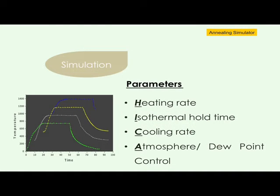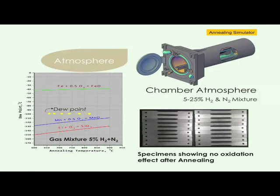Apart from simulating high heating and cooling rates, the most important feature of this simulator is dew point control of the annealing atmosphere to prevent loss of alloying elements due to oxidation at high temperatures. This can be easily achieved by varying the hydrogen percent of the gas mixture.